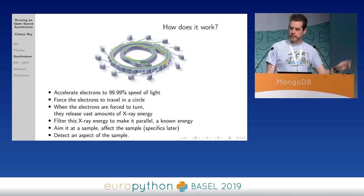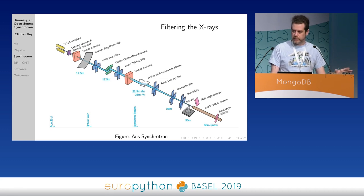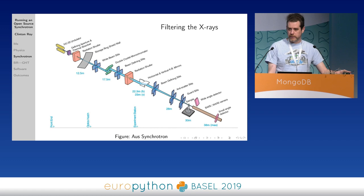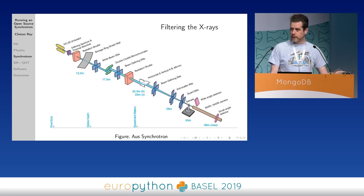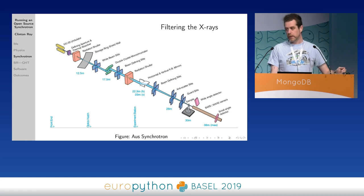In each one of those hutches around the circumference, you've got some form of filtering going on. This is a fairly standard setup for each beamline, however every beamline is different because they're using different parts of the X-ray spectrum. Because the X-ray beam is so dangerous, none of this is done by humans - all of this is done remotely. Every one of those slits and mirrors and focusing elements is controlled remotely. So there are tons and tons of motors, sensors and detectors in that setup, and we use those to control the beamline and how it hits the sample.